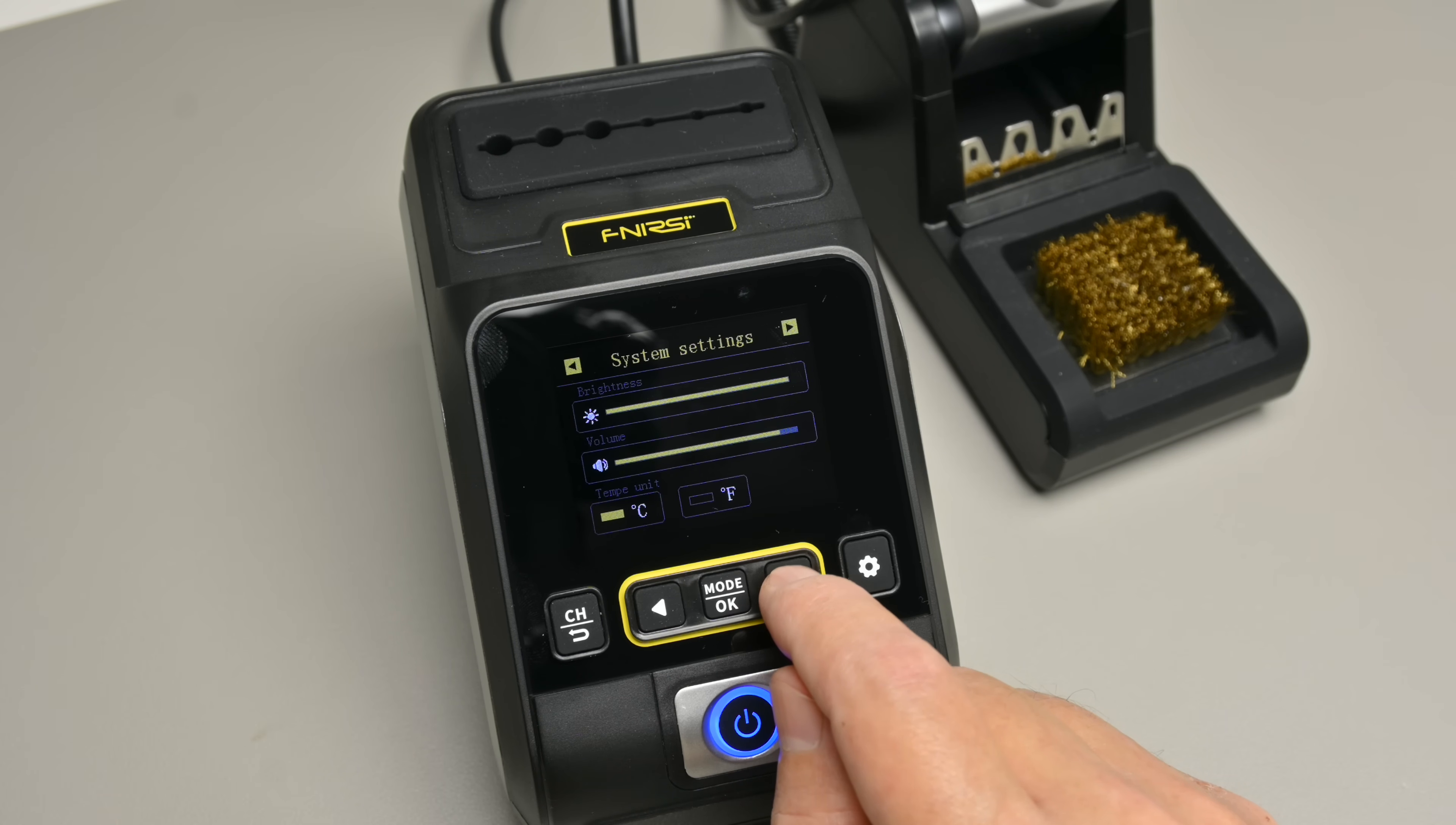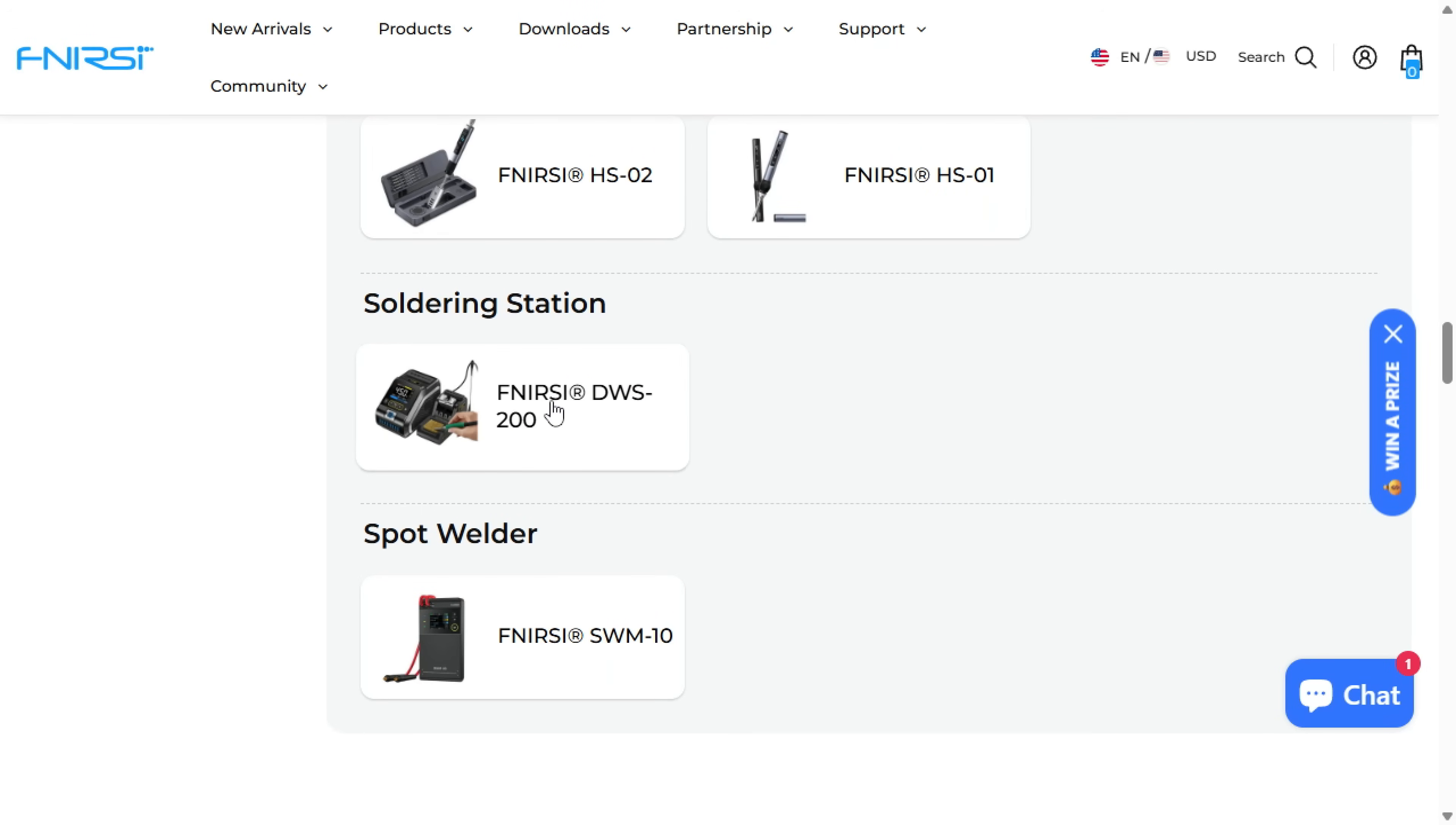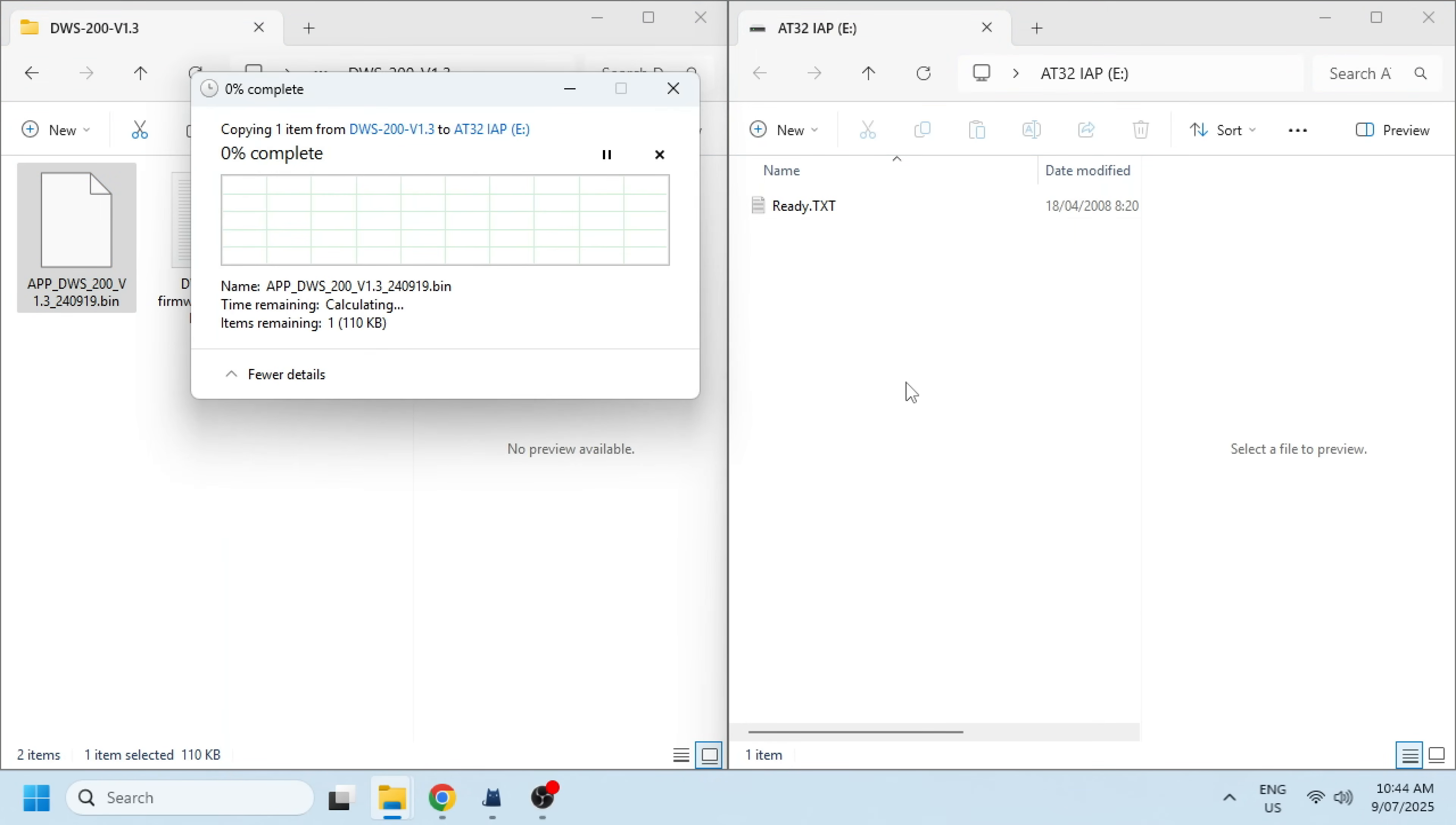You can reset all the settings to factory default and even update the firmware. My unit came with version 1.2 but on the website you can get a pdf manual and version 1.3. So of course I connected the USB-C port to my computer and upgraded to the new firmware.